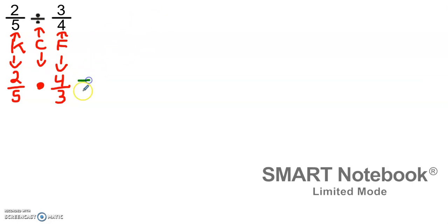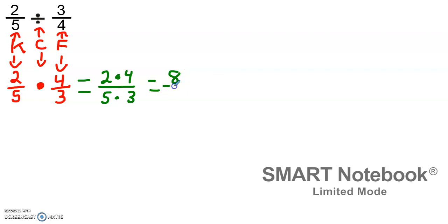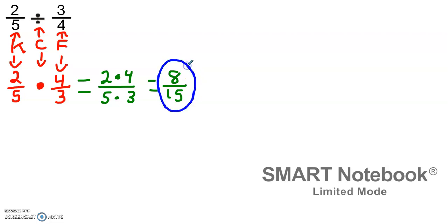Step three is we multiply straight across — numerator times numerator and denominator times denominator. We have our two numerators of two and four, and our denominators of five and three. Two times four gives us eight, and five times three gives us 15. Then in our last step, we simplify. My numerator is less than my denominator, and eight and 15 share no common factors, so my simplified answer is eight fifteenths. I'm going to circle it as my final answer.